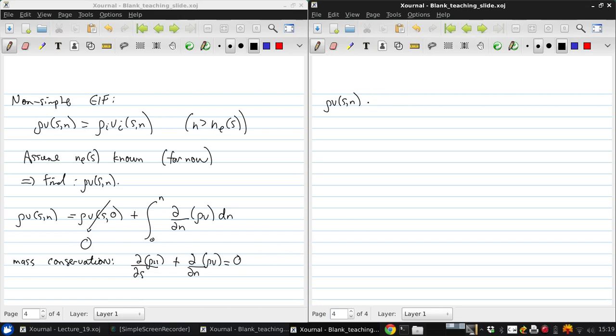That means that we can instead now just say that ρV of (s,n), dropping the first term, is the integral from 0 to n of minus ∂/∂s (ρU) dn. So, this then, can now be manipulated a bit further, just by adding and subtracting.